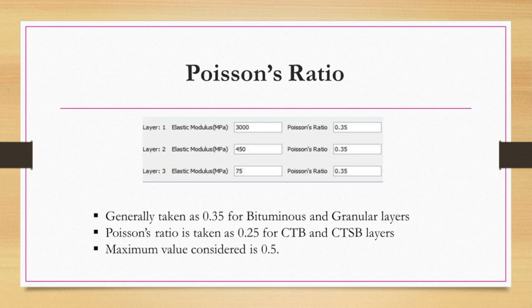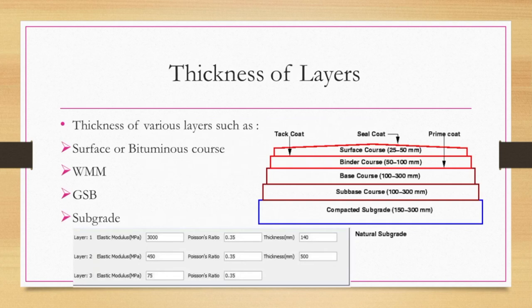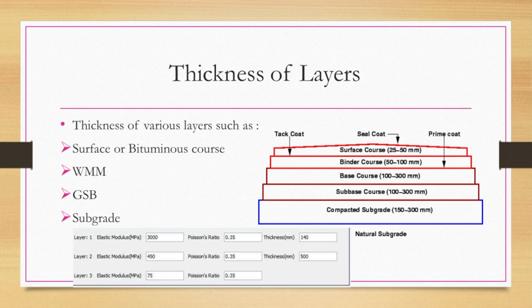Poisson's ratio is generally taken as 0.35, and the maximum value is 0.5. If CTB layers are considered, the Poisson's ratio is taken as 0.25 for that particular layer. Next is the thickness of all the layers considered in the pavement. If CTB layer is considered, separate thickness must be mentioned.